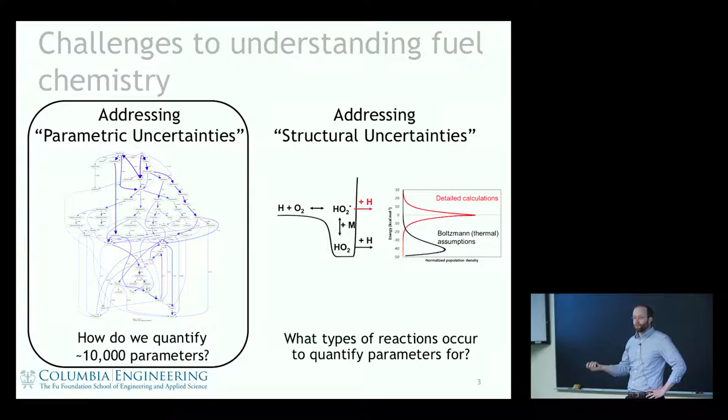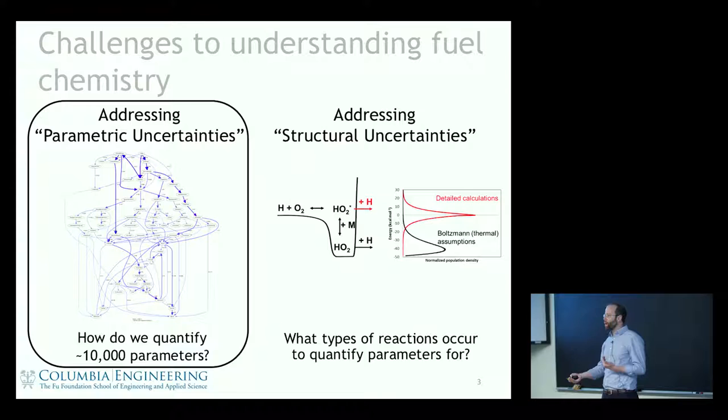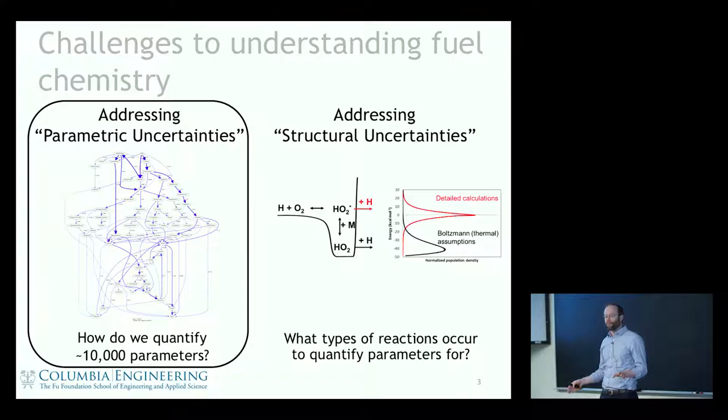With this soup of intermediate species, they can all undergo simultaneous competitive reactions, so you end up with tens to hundreds of thousands of possible reactions. Each of those occurs with rates that are temperature, pressure, and sometimes even mixture composition dependent. In a nutshell, there is an incredible amount of parameters that are important for these sorts of systems.